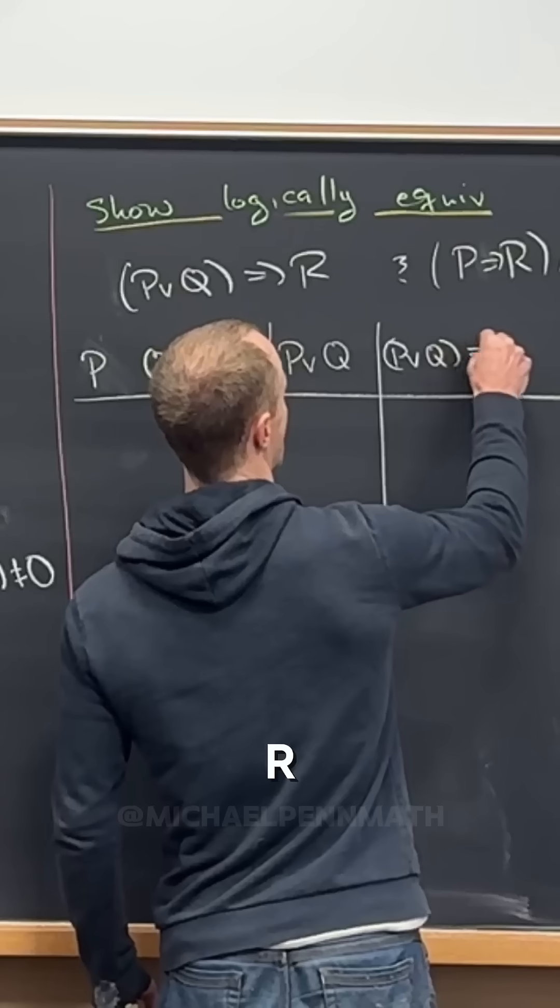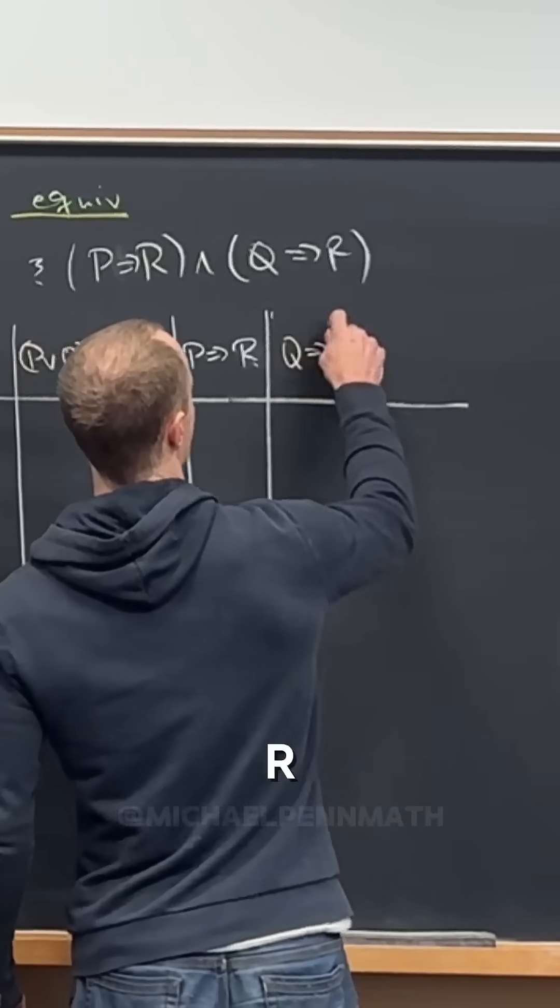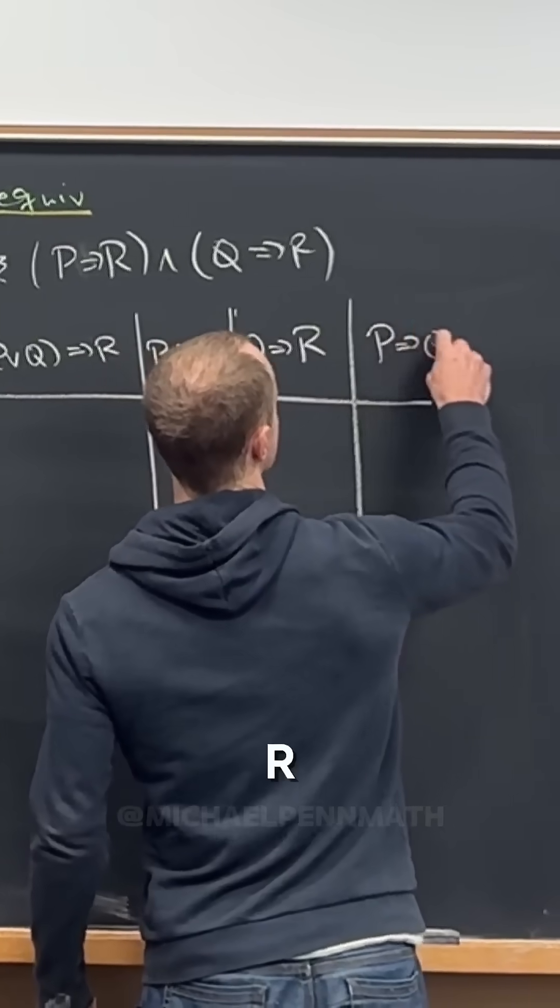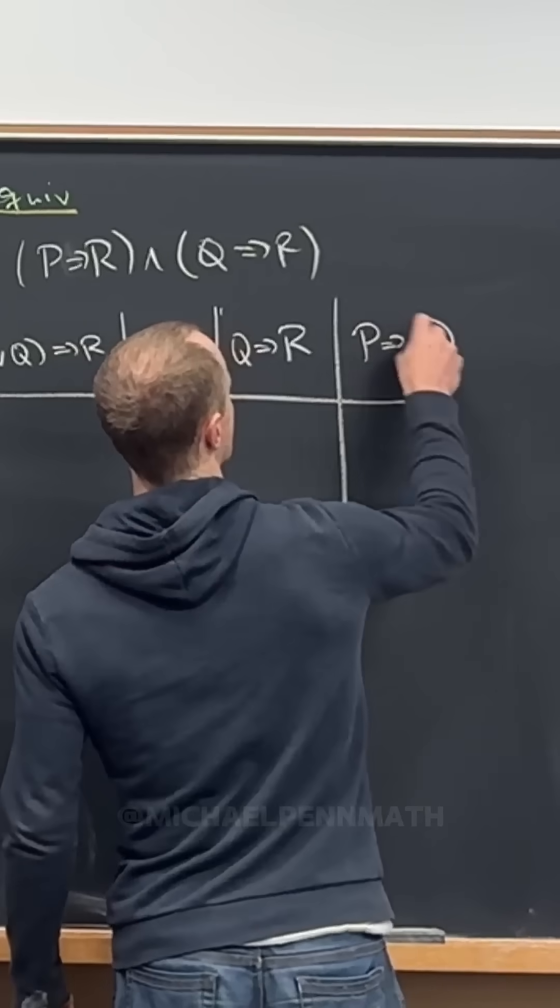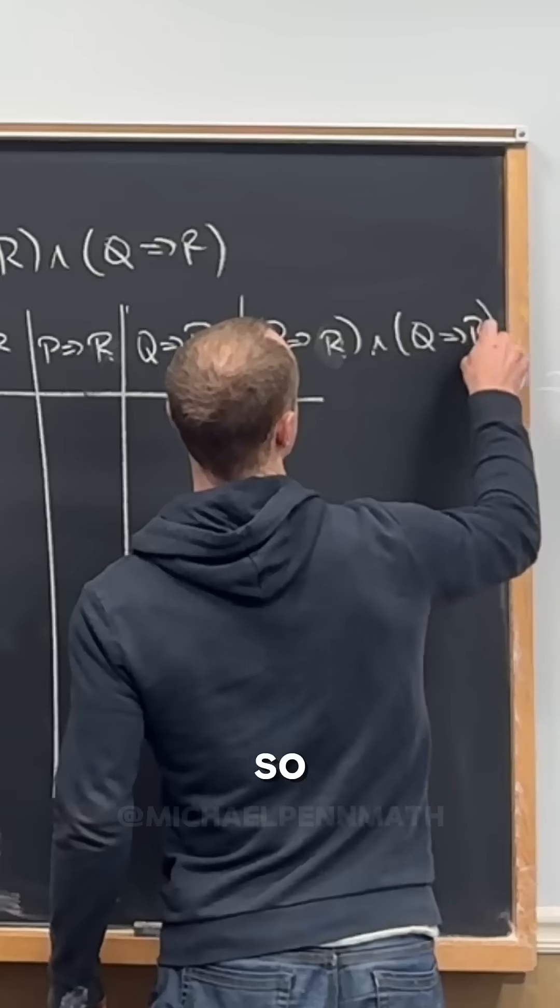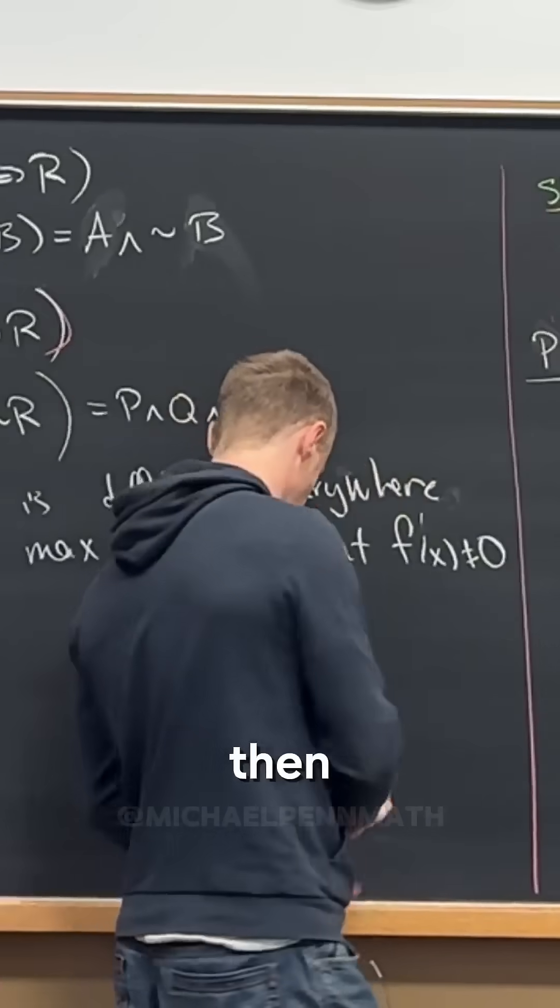Or implies R right here, right? Then Q implies R, and then P implies R, and Q implies R. So that would get them all written down a little bit at a time.